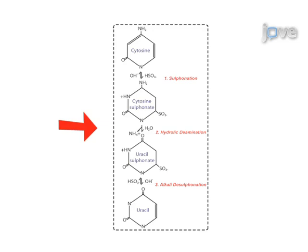Secondly, hydraulic deamination of the cytosine bisulfite derivative produces a uracil bisulfite derivative. And thirdly, removal of the sulfonate group by alkali treatment results in a uracil residue.